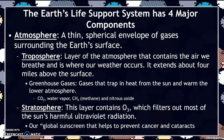The troposphere extends about four miles above the surface of the earth. This is where we keep a lot of our greenhouse gases — these are gases that trap heat from the Sun and warm the lower atmosphere, making it viable for us to live on planet Earth. Greenhouse gases include things like CO2, water vapor, methane (which is CH4), and nitrous oxide.